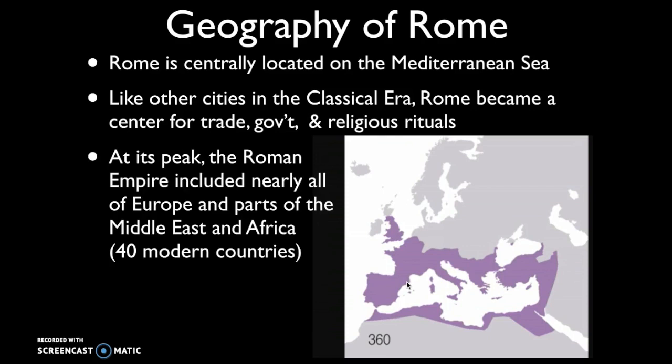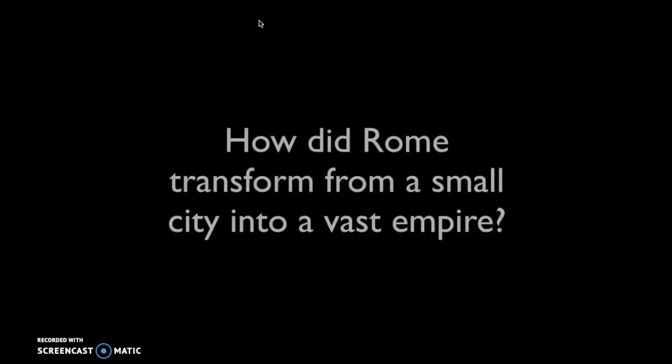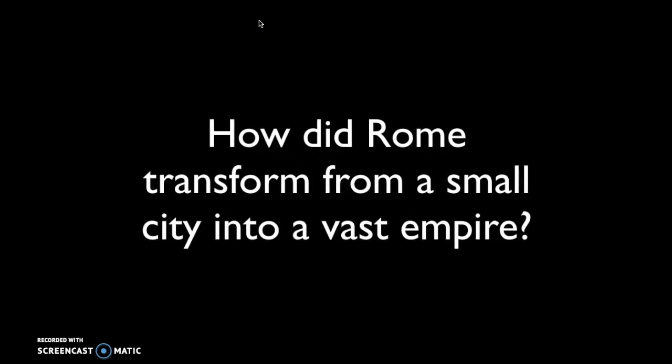At its peak, the Roman Empire included nearly all of Europe, parts of the Middle East, and Africa — which includes 40 modern-day countries. So it was an incredibly diverse empire with people of different ethnicities, speaking different languages, and practicing different religions.